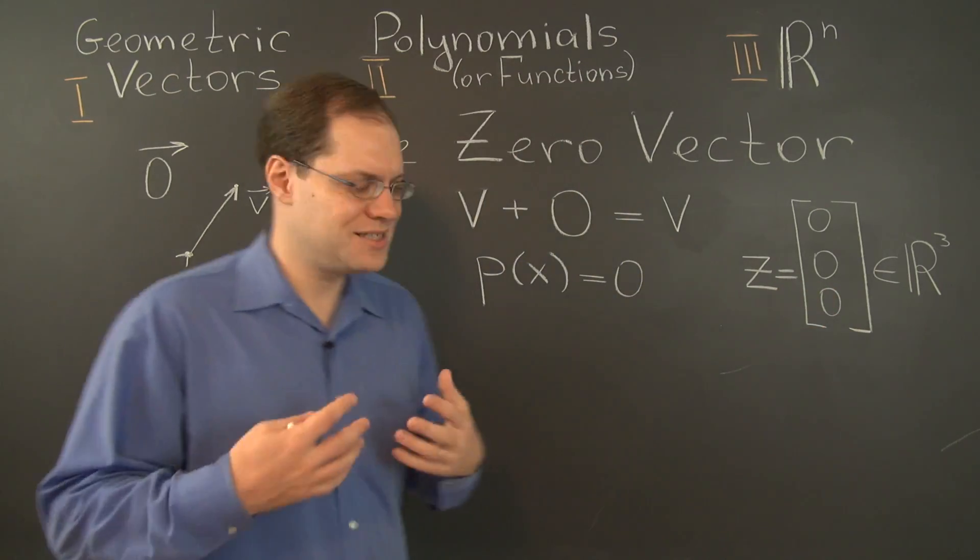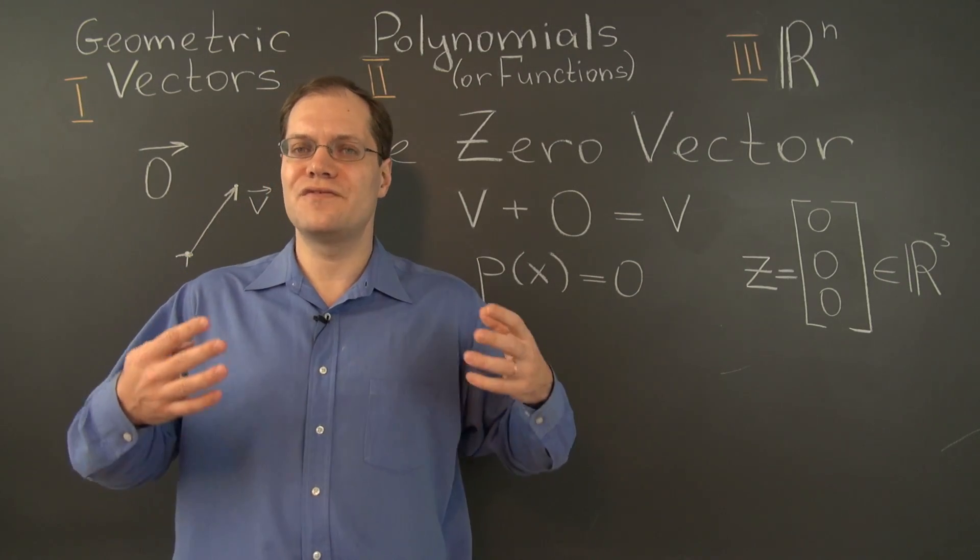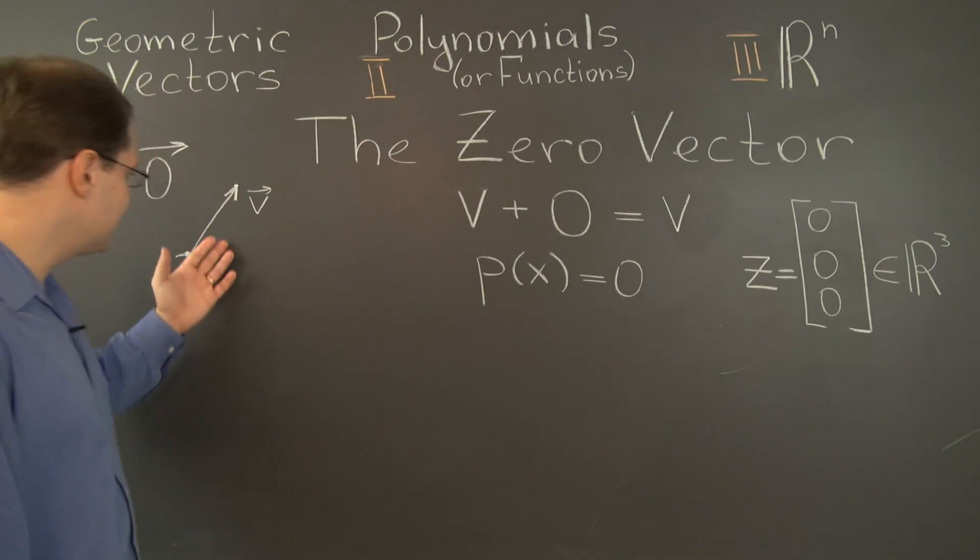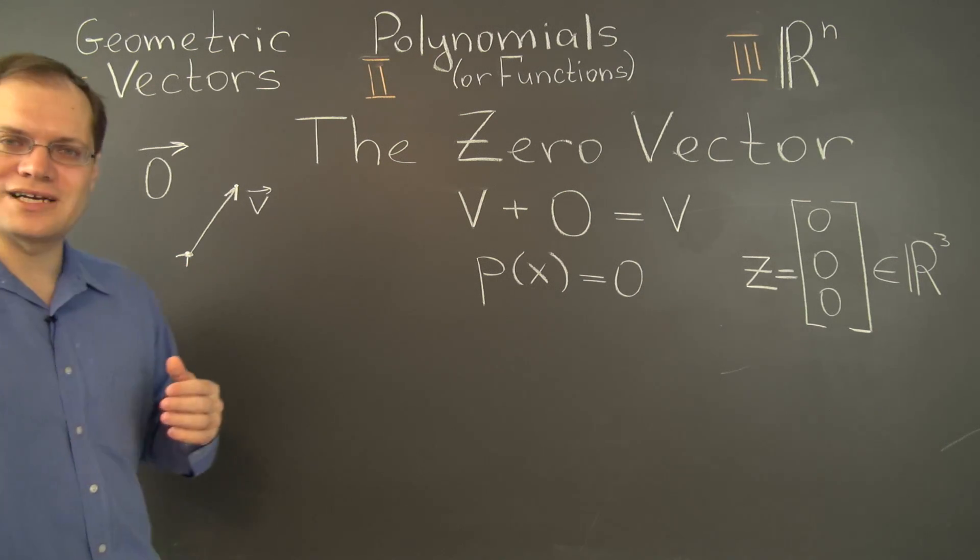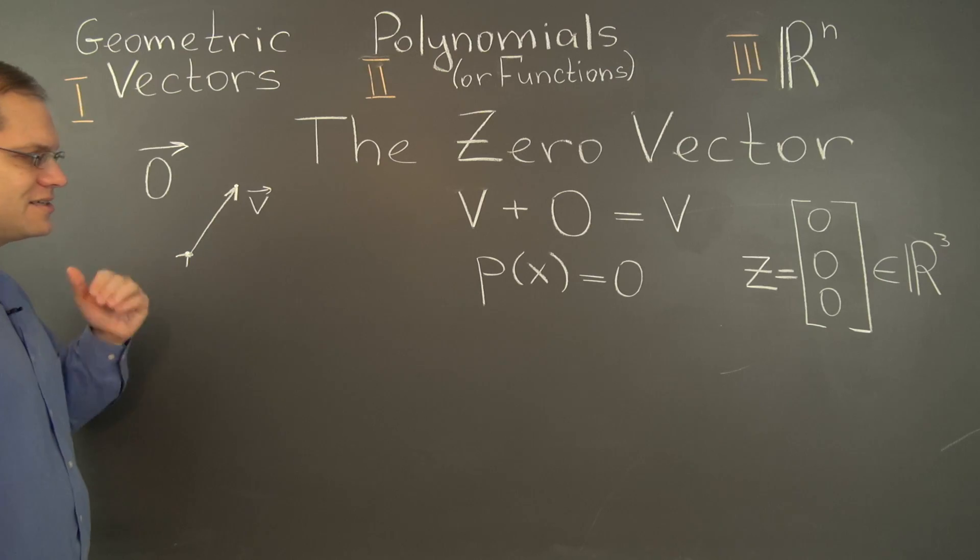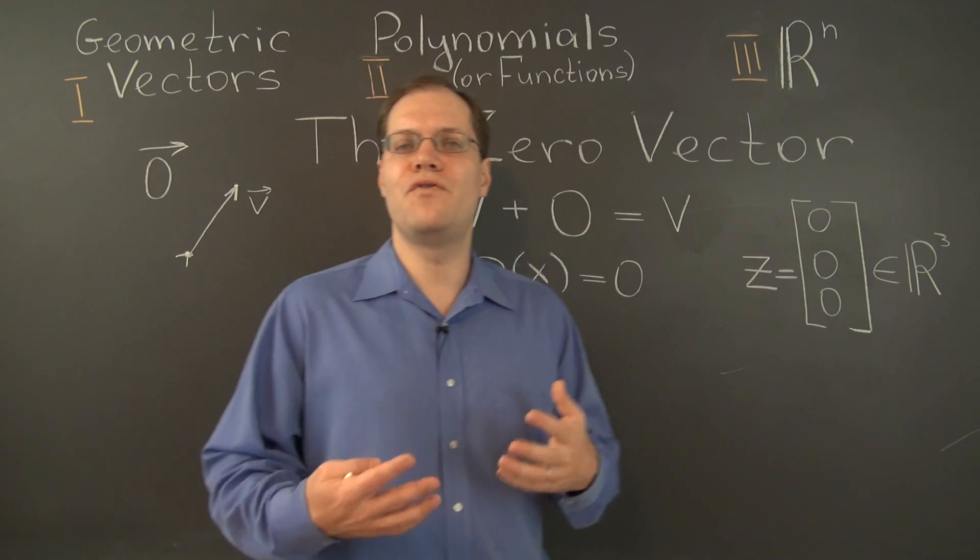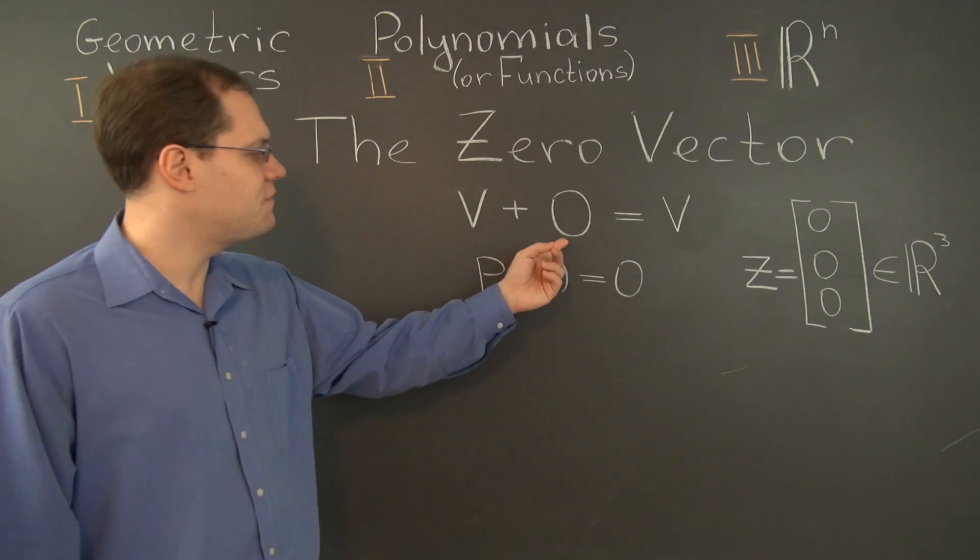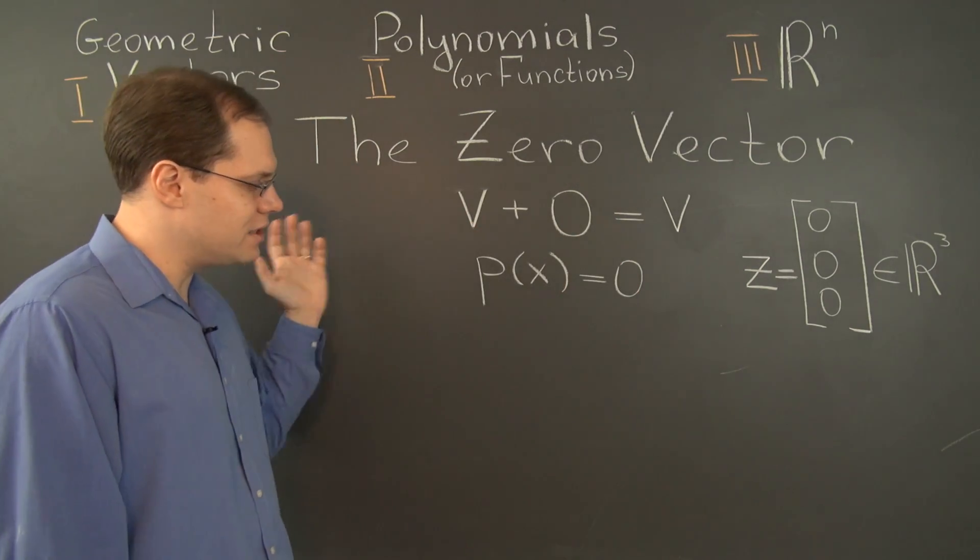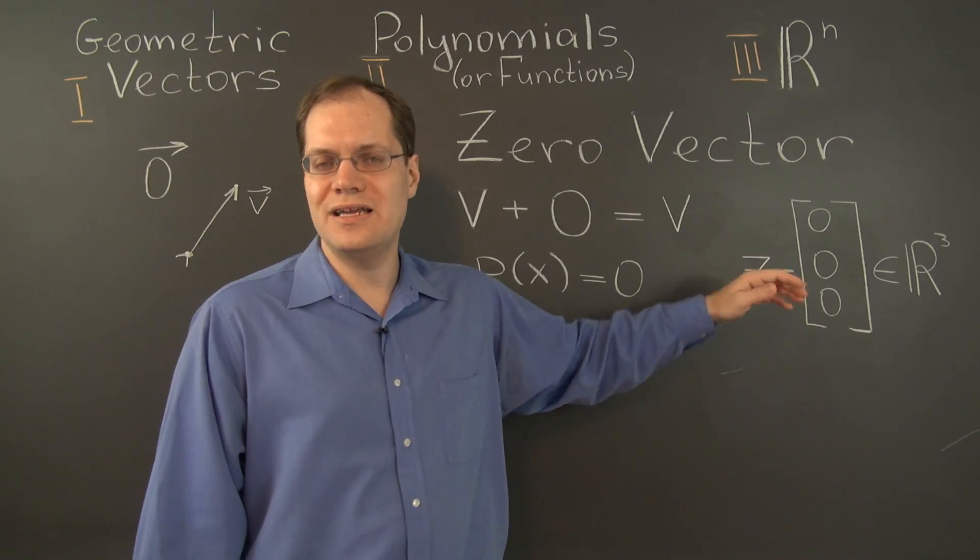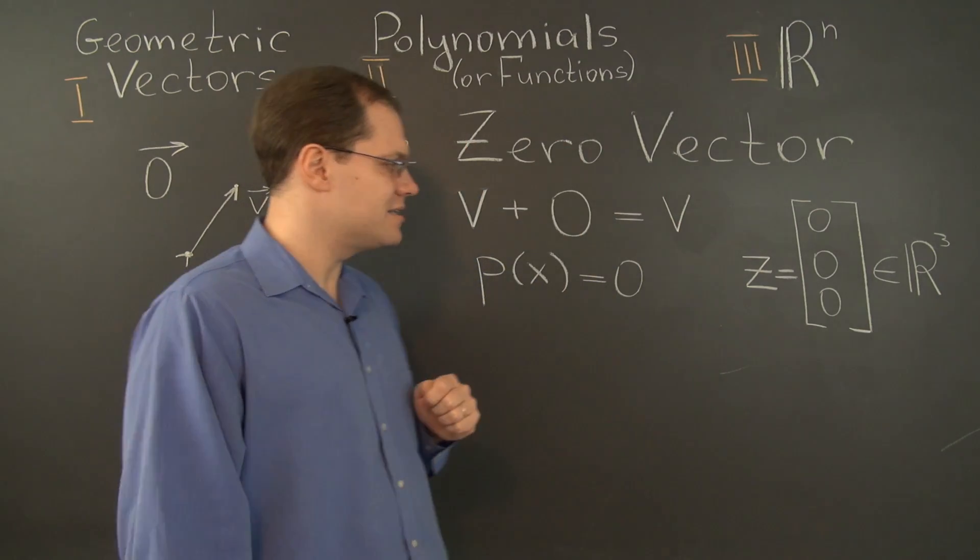So here we go, we have three zero vectors in the three different spaces. Of course, they're very different in form. Here it's a directed, not really directed, but an attempt at a directed segment. Here it's a polynomial, and here it's a triplet of numbers. The forms are very different, but the function is exactly the same. Adding any one of these vectors to any one of their colleagues will leave those colleagues unchanged.